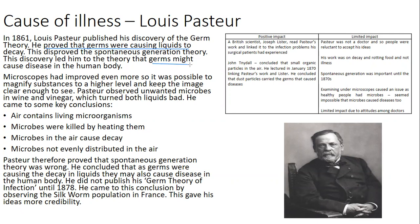He didn't prove that until 1878. Microscopes had improved, so Pasteur was able to magnify to a higher level so images were clearer. He looked at microbes in wine, vinegar, beer, etc., and came to four conclusions: air contains living microorganisms; germs can be killed by heating them — this is why they started to pump heat into surgical theatres; microbes in the air cause decay and they're not evenly distributed, meaning germs could be anywhere. So Pasteur proved spontaneous generation was wrong, said germs were causing decay and may also cause disease, which led to his 1878 germ theory of infection, giving his ideas more credibility.